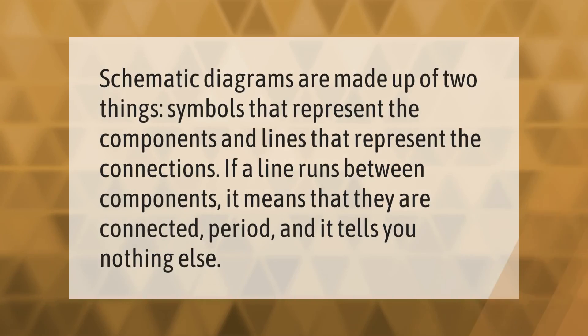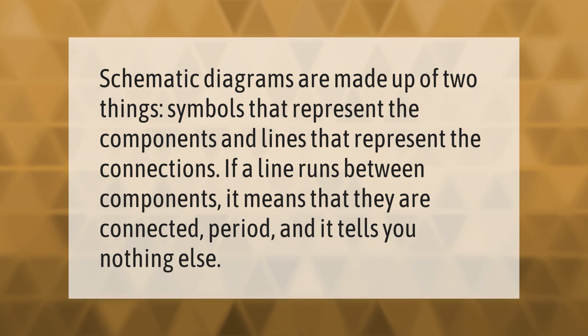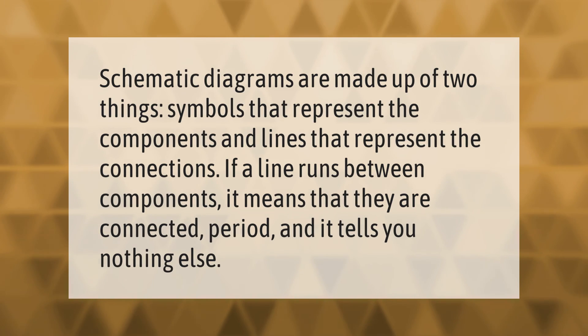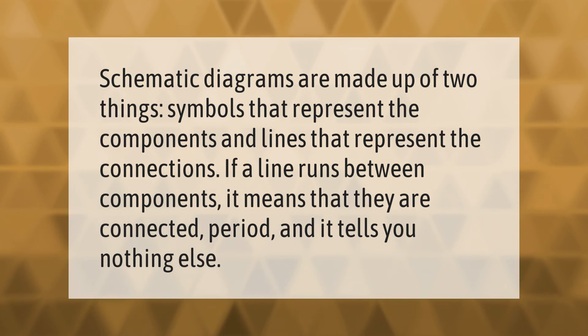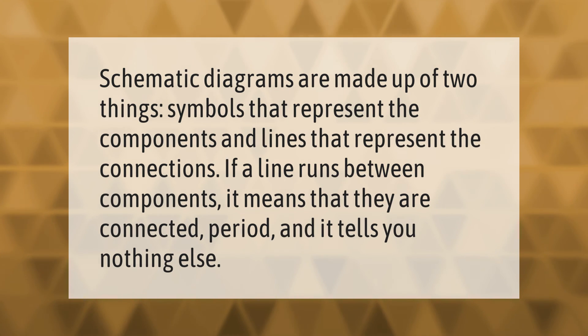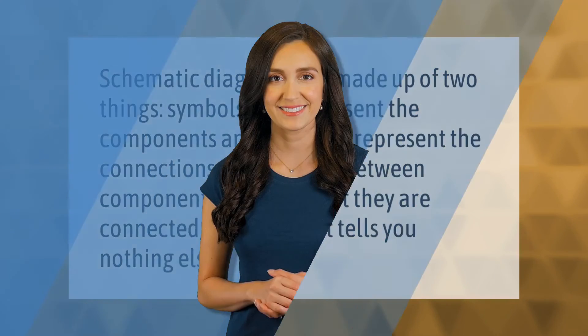Schematic diagrams are made up of two things: symbols that represent the components, and lines that represent the connections. If a line runs between components, it means that they are connected — and it tells you nothing else. Thank you for watching; please subscribe and hit the bell notification.